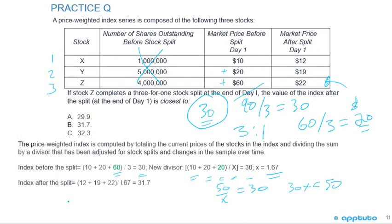Now plug in the actual post-split prices: 12 plus 19 plus 22, divided by the new divisor 1.667. This gives approximately 31.7, so the correct answer is B. The math isn't difficult — you just have to work through the steps carefully, as the question wording can create some confusion.